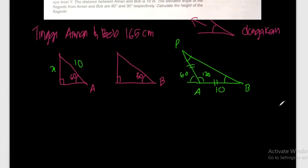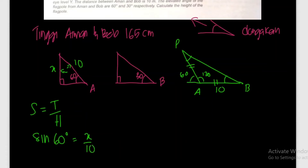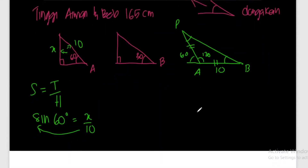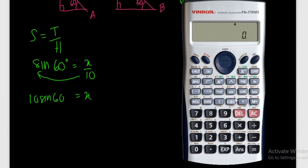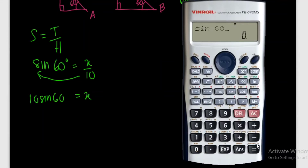Kita andaikan dia X. Opposite dengan hypotenuse, so Sine lah. Tentangan per hypotenuse - Sine 60°. Tentangan per hypotenuse - X dibahagi 10. Bawa 10 ke sebelah. So 10 Sine 60° sama dengan X. Tekan calculator.